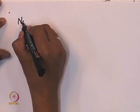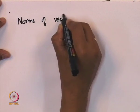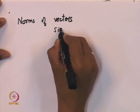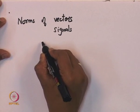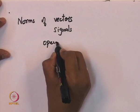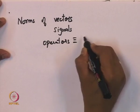Welcome everyone to this lecture in nonlinear dynamical systems. Today we are going to cover some norms of vectors, in particular we are interested in signals and then norms of operators — operators are in our context systems.